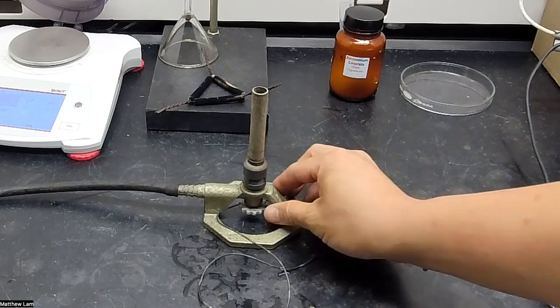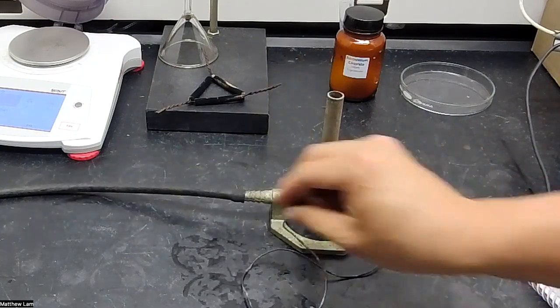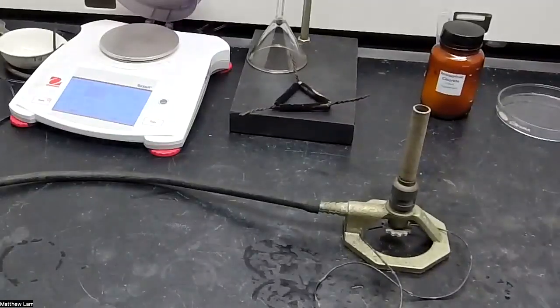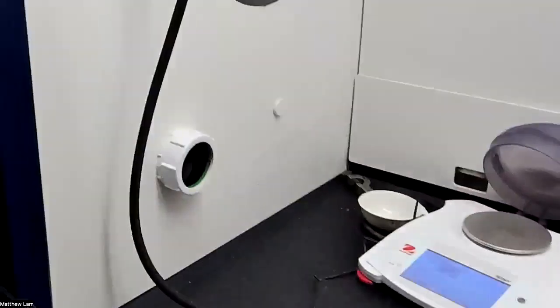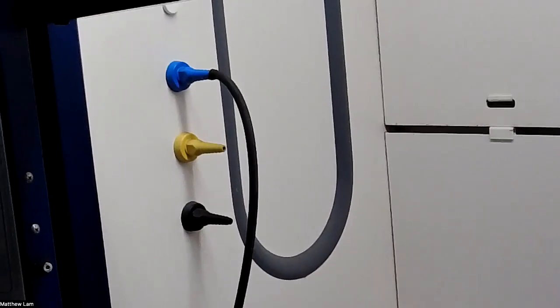So this is the Bunsen burner here. This Bunsen burner, as you can see, is connected to - let me open this hood a little bit - a gas line up there.